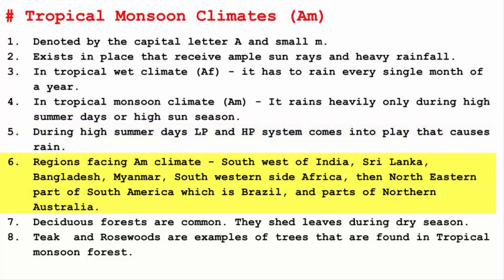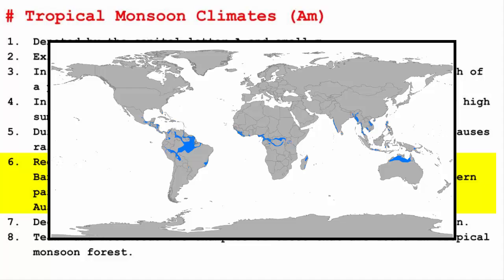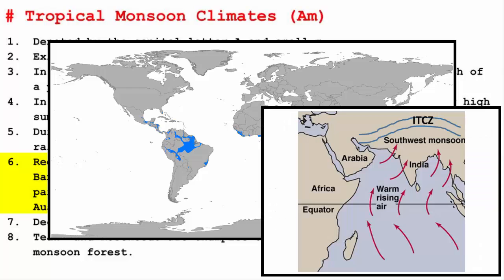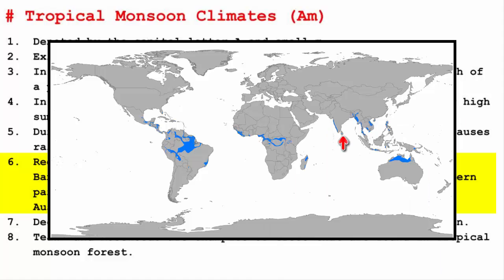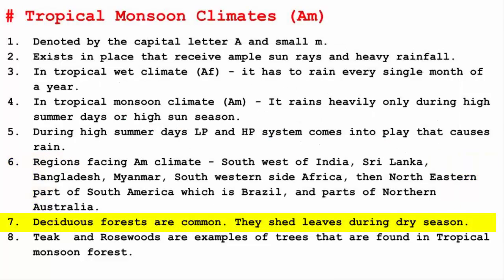The countries that have the Tropical Monsoon Climate are along the coastal regions of South-West India, where the South-West Monsoon arrives in India. Then we have Sri Lanka, Bangladesh, Myanmar, the South-Western side of Africa, then the North-Eastern part of South America, which is Brazil, and parts of Northern Australia.